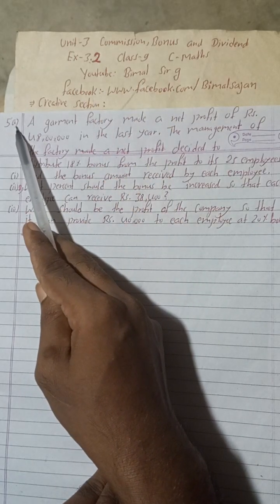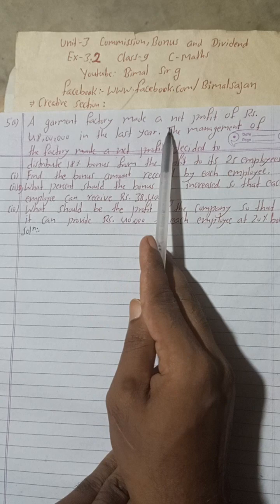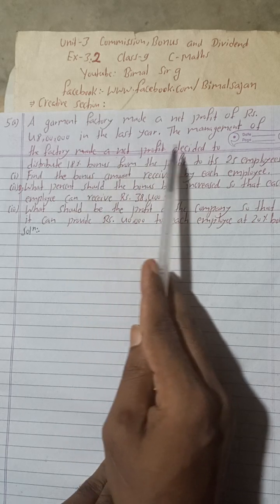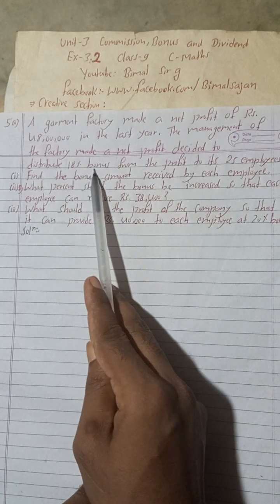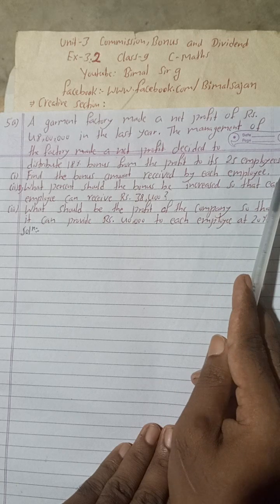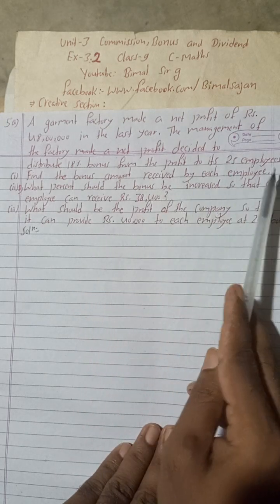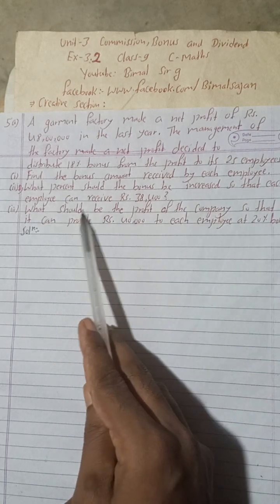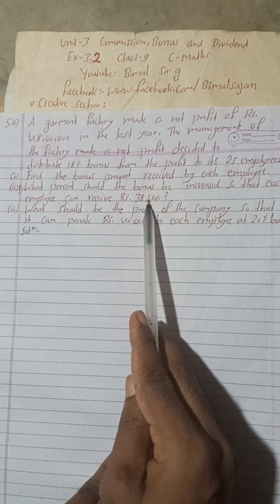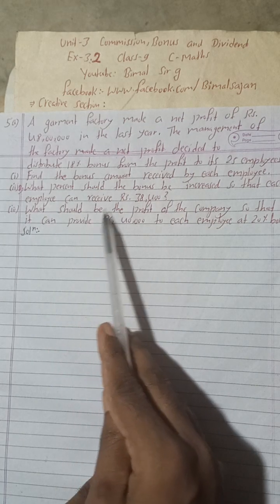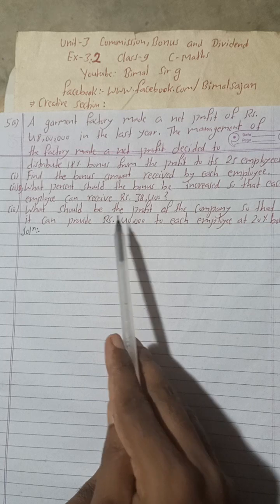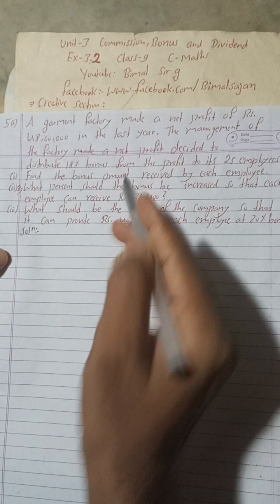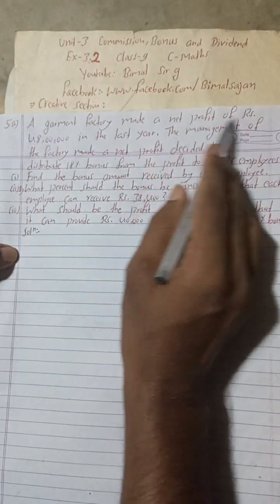Now let's begin the solution for 5A. A garment factory made a net profit of Rs 48 lakh in the last year. The management decided to distribute 18% bonus from the profit to its 25 employees. Find: (1) the bonus amount received by each employee, (2) what percent the bonus should be increased so that each employee can receive Rs 38,400, and (3) what should be the profit of the company so that it can provide Rs 40,000 to each employee at 20% bonus.